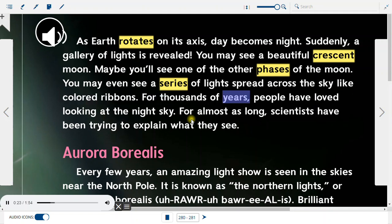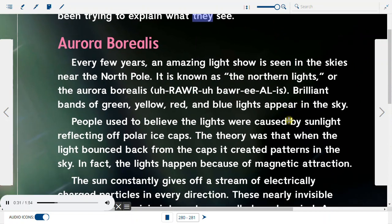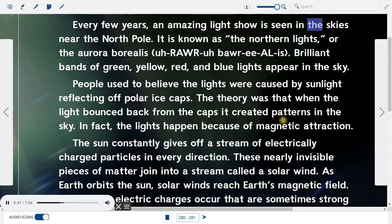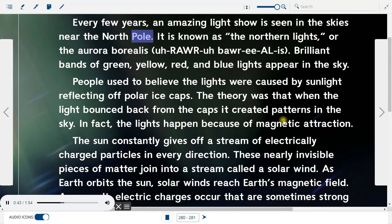Aurora Borealis. For thousands of years, people have loved looking at the night sky. For almost as long, scientists have been trying to explain what they see. Every few years, an amazing light show is seen in the skies near the North Pole. It is known as the Northern Lights or the Aurora Borealis. Brilliant bands of green, yellow, red and blue lights appear in the sky.